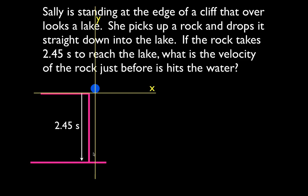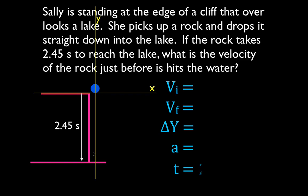The next thing I like to do is write down all five of the variables in the kinematic equations: the initial velocity, the final velocity, the change in position, the acceleration, and the time. Now I'll fill in what I know and what I'm looking for. They only tell us explicitly that the rock takes 2.45 seconds to reach the water, so I put down the time as 2.45 seconds. Since Sally is just dropping the rock, it has an initial velocity of 0 meters per second.